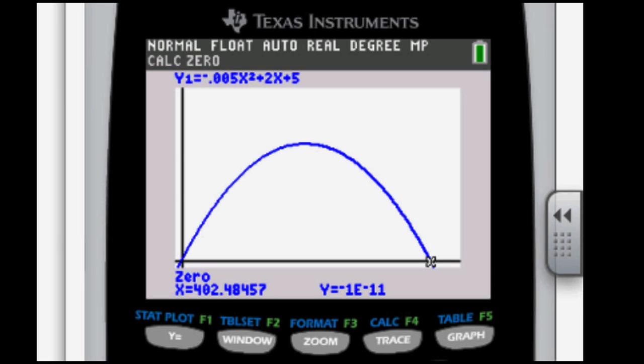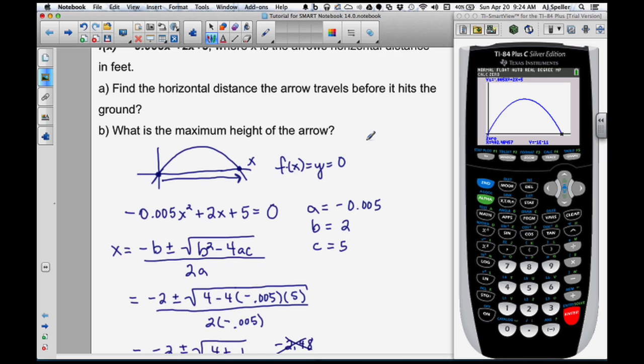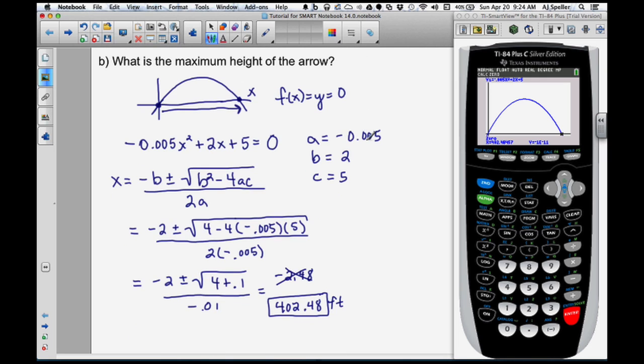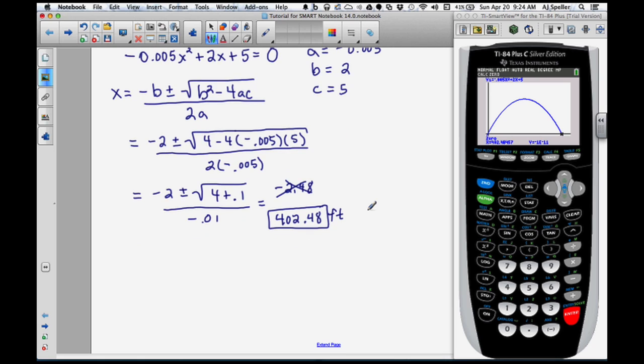Let's scroll up, and let's take a look at part B of this particular question. For part B, we need to find the maximum height of the arrow. Well, to find the maximum height, we need to find this Y value. First, let's calculate it by hand, and then we'll go back and check our work using the calculator.